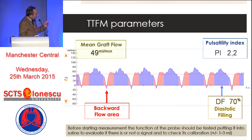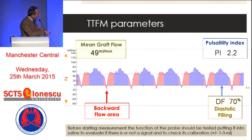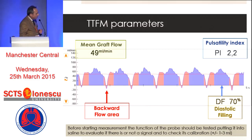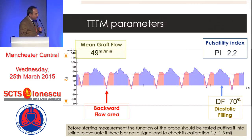There is also the backward flow area — a small curve below the zero flow line — which can be large or small depending on the quality of flow inside the graft. It is an index of anastomosis patency per se. Finally, there is the percentage of diastolic flow, which the latest revision of the equipment displays in blue.